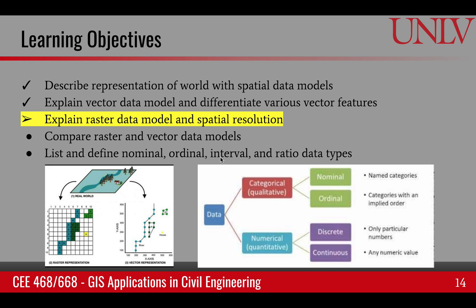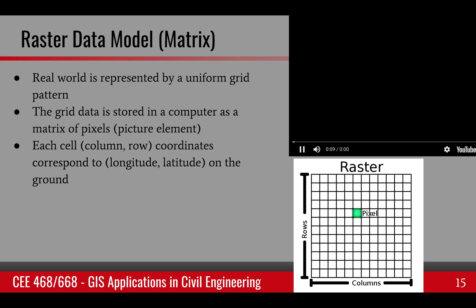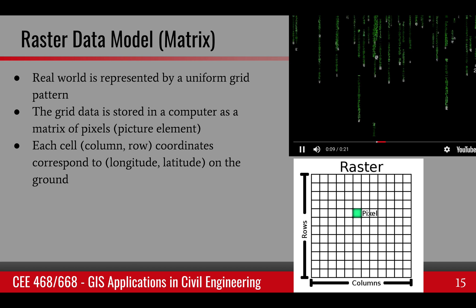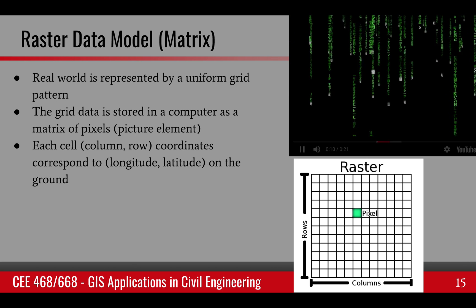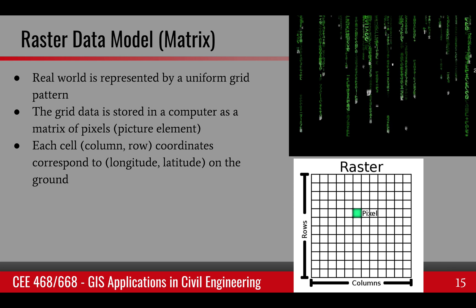The next learning objective of this module is the explanation of the raster data model and spatial resolution. A raster data model is like a matrix — the real world is represented by a uniform grid pattern, and that grid pattern is stored in a computer in the form of a matrix of pixels. Pixels is an abbreviation for picture elements.